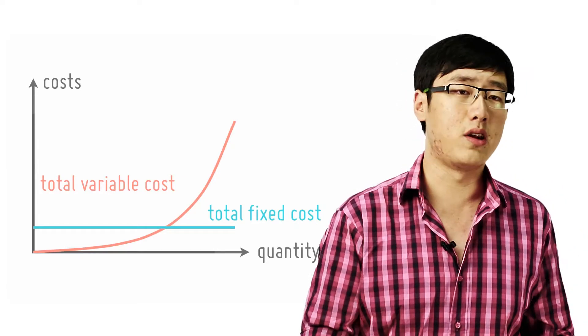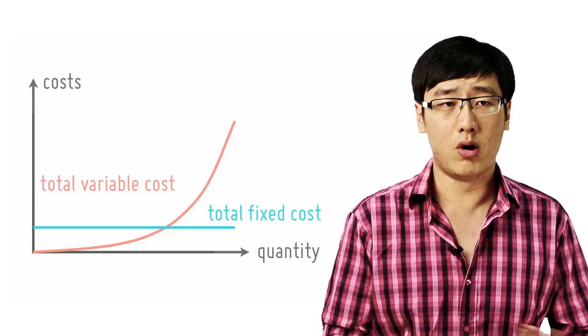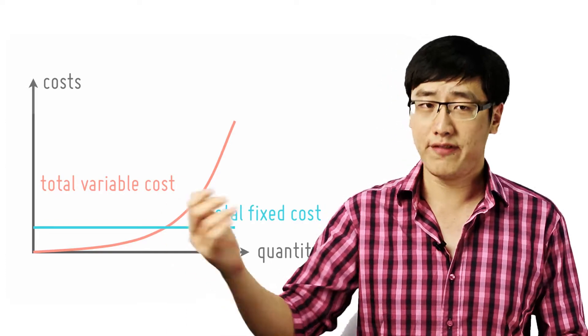The TVC curve follows the law of diminishing returns. Initially, before the diminishing returns set in, more workers are taken at first. We know workers can be increasingly specialized and make fuller use of equipment.